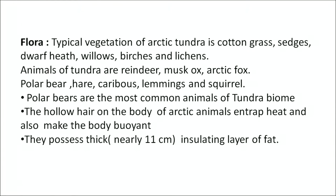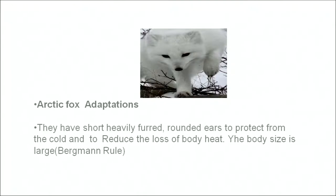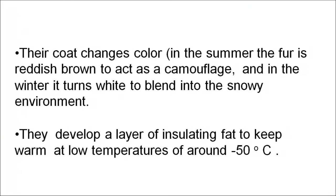Typical vegetation of the tundra includes cotton grass, sages, dwarf heath, willows, birch and lichens. Animals include reindeer, musk ox, arctic fox, polar bear, hare, caribou, lemmings and squirrel. Polar bears are the most common animals of the tundra biome. The hollow hairs on the body of arctic animals entrap heat and make the body buoyant. They possess a thick, 11-centimeter insulating layer of fat. The arctic fox is highly adapted to the polar region — its coat changes color: reddish brown in summer as camouflage, turning white in winter to blend into the snowy environment. They also develop an insulating fat layer to keep warm at temperatures around minus 50 degrees Celsius.